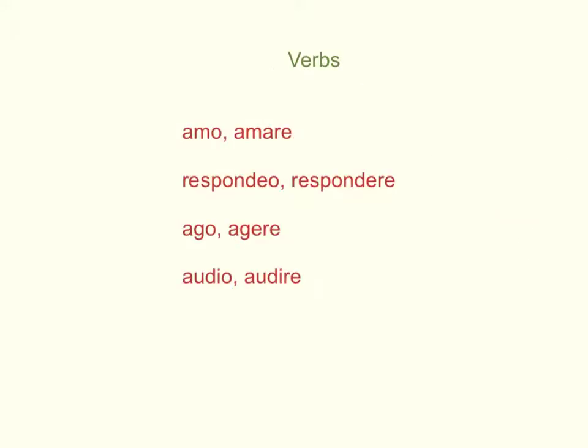For verbs, on the other hand, you're going to need something that are called principal parts. And we're going to give you two. Ultimately there are four. You're not going to have to worry about the third or the fourth for quite a while, but you need both, and let me show you why.